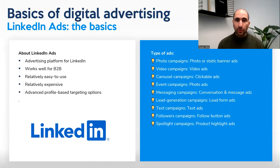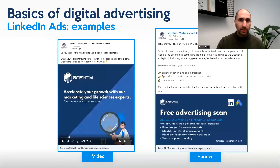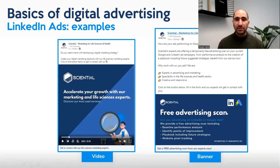LinkedIn offers various ad types: photo, video, carousel, event promotion, messaging, lead generation campaigns, text campaigns, follower campaigns, and product spotlight ads. For example, this is a video ad that plays as someone scrolls through LinkedIn, and this is a static banner — a photo that doesn't move — which is also an effective advertising option.